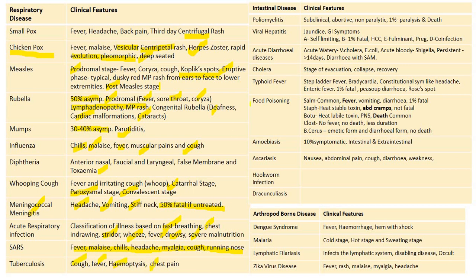Polio is a gastrointestinally transmitted disease presenting with CNS manifestations. Most infections go subclinical; some go as minor illness; some as non-paralytic CNS manifestations; only 1% of cases cause paralysis and death. Viral hepatitis causes jaundice and GI symptoms. Hepatitis A is usually self-limiting; B is 1% fatal; E causes fulminant hepatitis especially with pregnancy; D is dangerous as co-infection with hepatitis B.